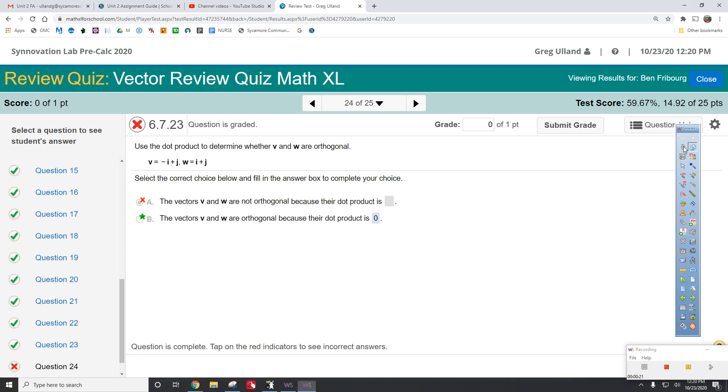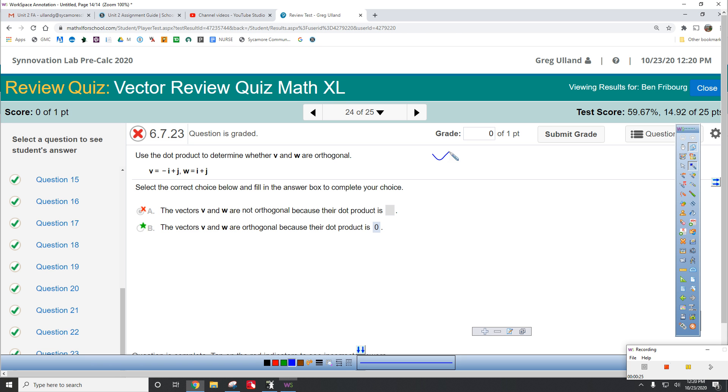So, V, excuse me, V is negative 1 comma 1, and W is 1 comma 1. Do you guys agree?